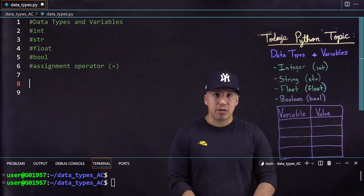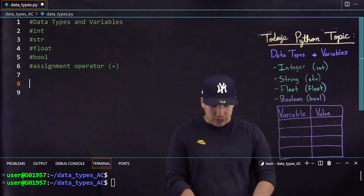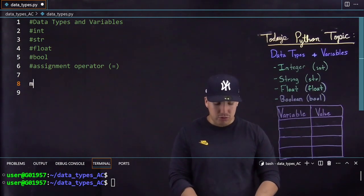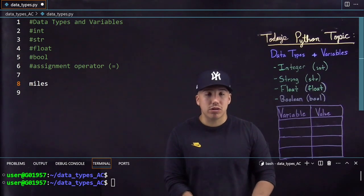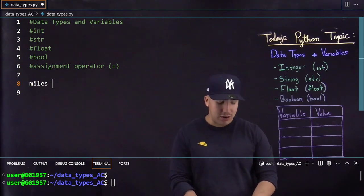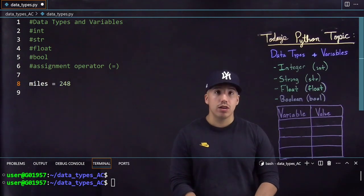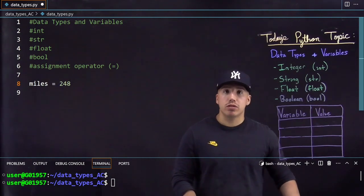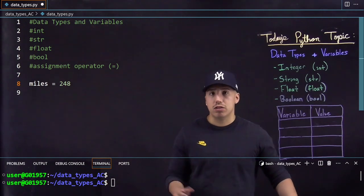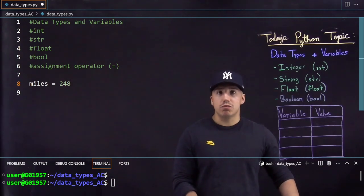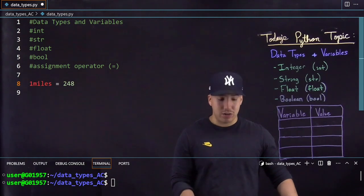So we'll start off by declaring miles. I'll use miles because tomorrow I have to drive back home and I'll be driving 248 miles. So this works in Python. When creating a variable there's things you have to take into account. There's rules you have to follow. So I can't start off my variable name with a number. I also can't have two words.